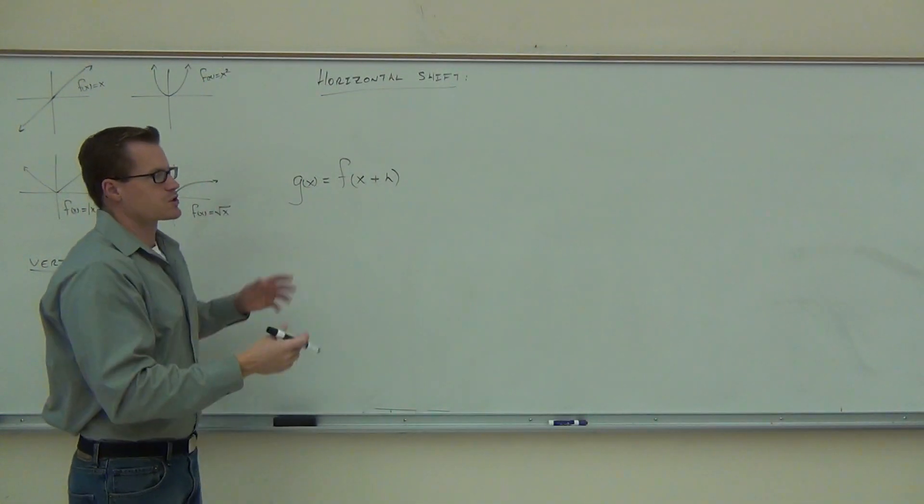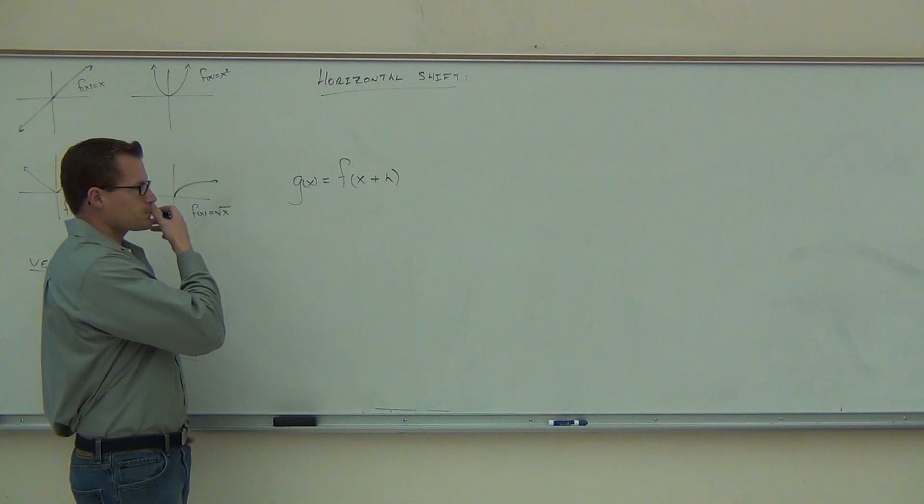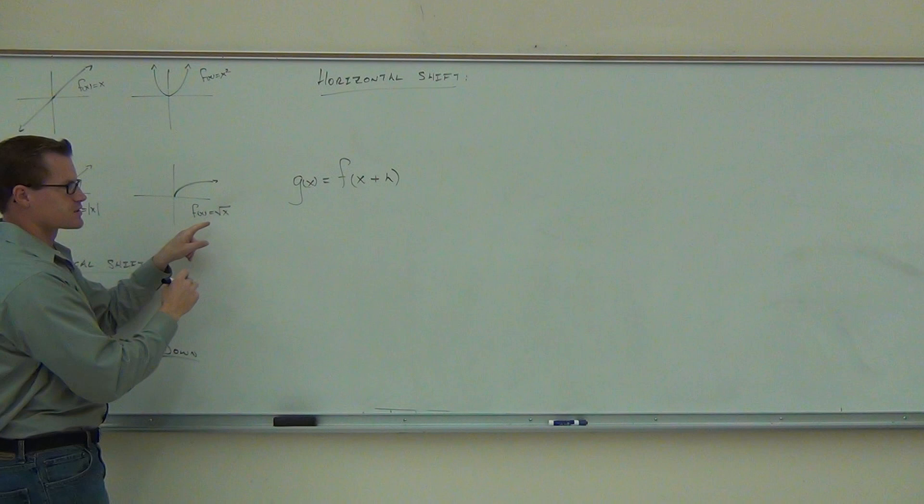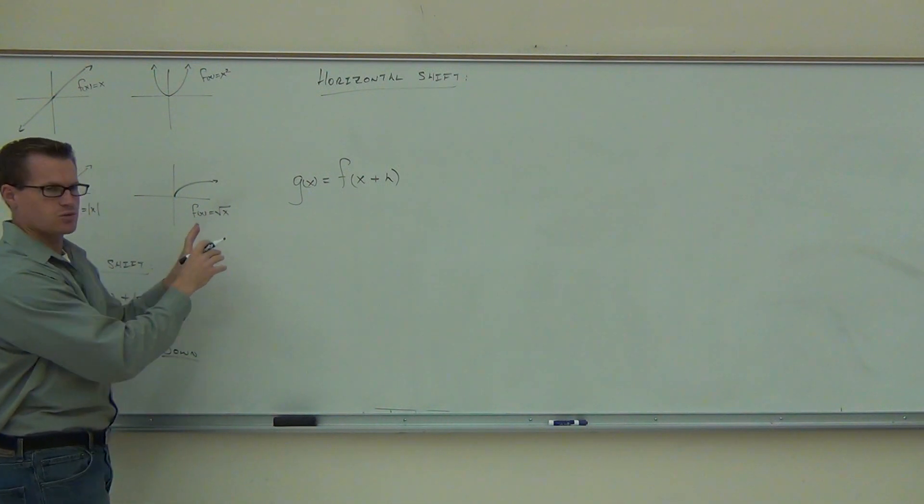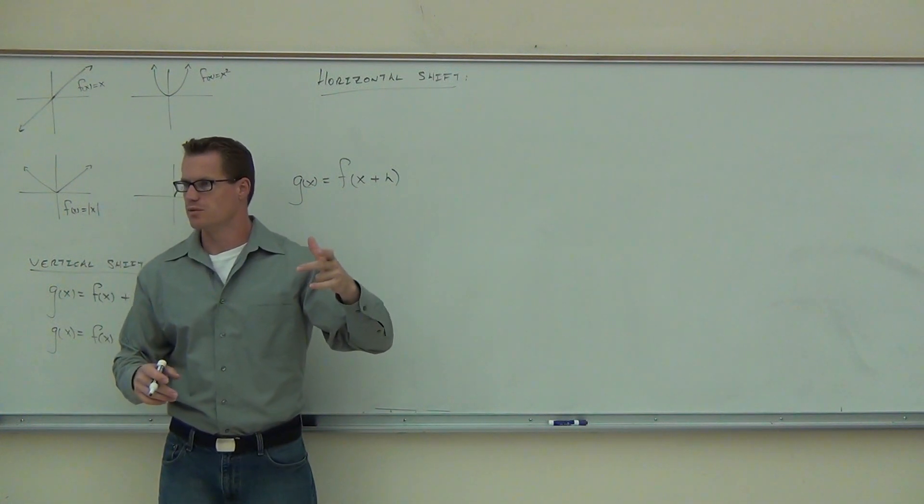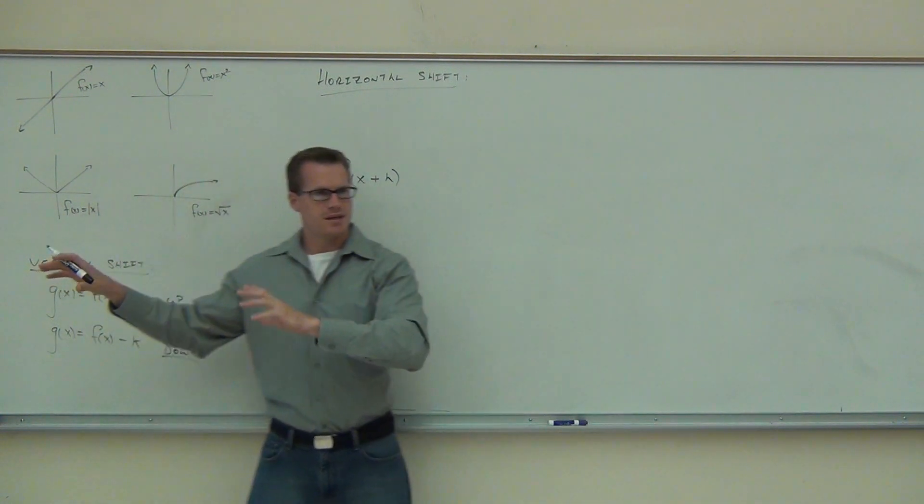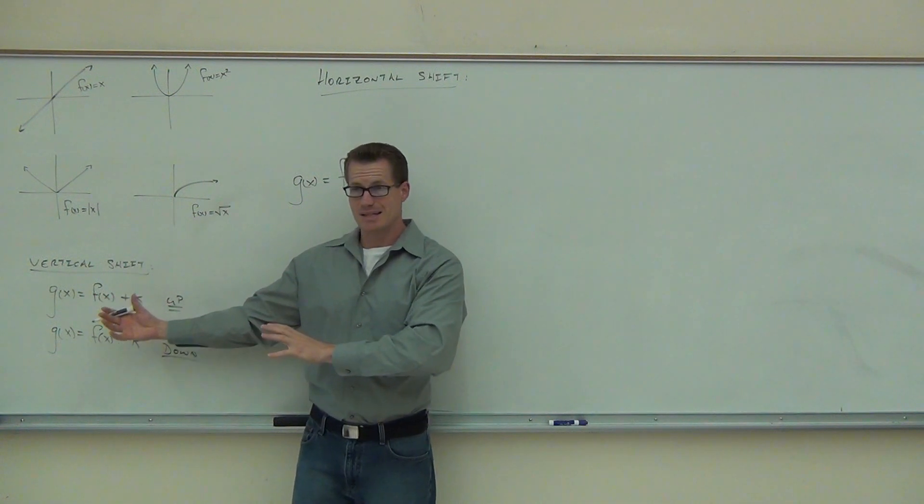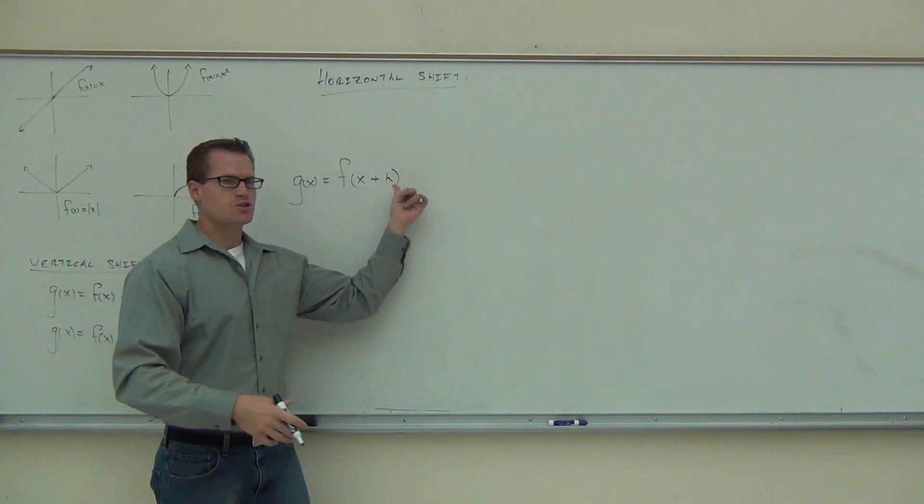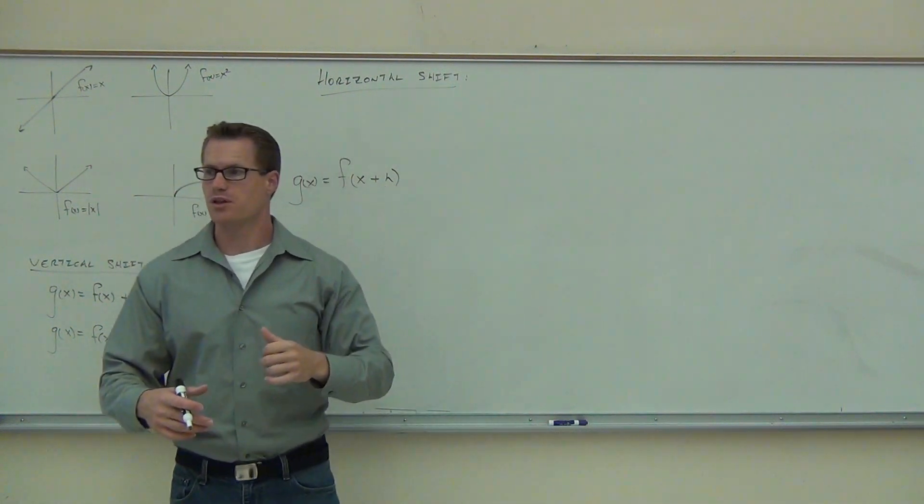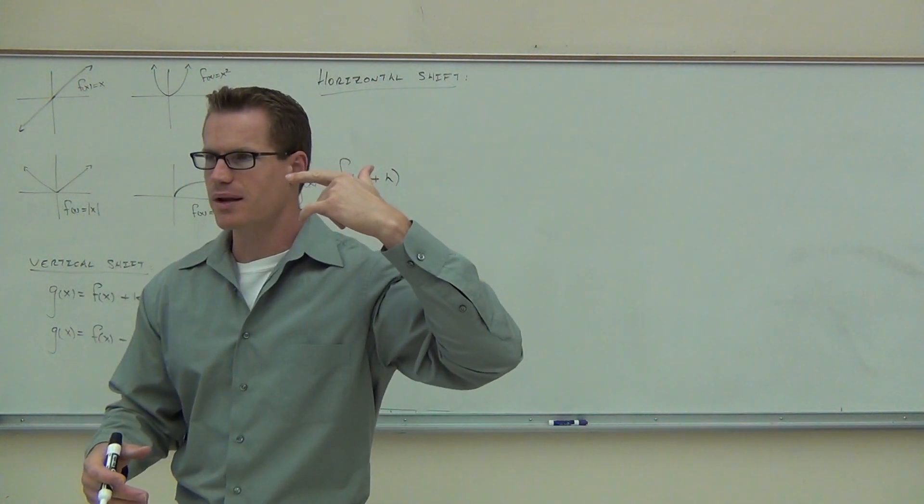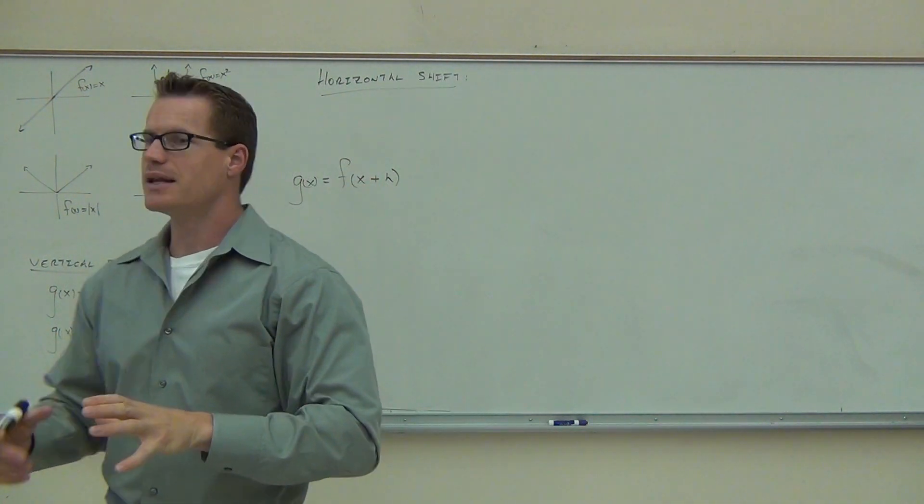So when we looked at this the first time, we said, all right, what is this actually doing? If we looked at our square root of x from last time, we said the square root of x plus 2. What this is doing, and this is going to seem kind of backwards to you a little bit. Because when we did this, our vertical shift, and if you add k, it makes sense that it goes up, right? If you subtract k, it makes sense that it goes down. If you add h within the function, a lot of people are going to think, oh, you know what? If I add h, it goes to the right. That would actually kind of logically make sense, right? But it's kind of backwards to that. And here's why.